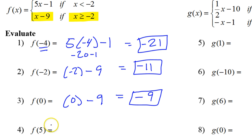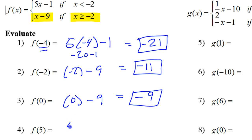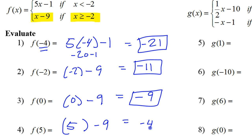What about number 4? Is 5 less than negative 2? No. Is 5 greater than or equal to negative 2? Yes. So again, we're using the bottom part of the function: x minus 9, which means 5 minus 9, so that is negative 4. That would be the answer to number 4.